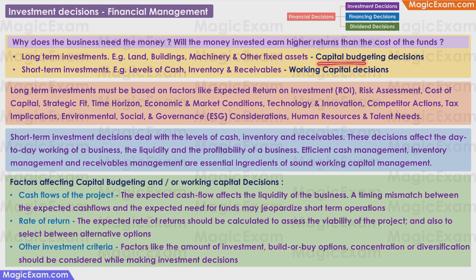These decisions are called capital budgeting decisions. The business may also need money for short-term investments like maintaining some levels of cash, some levels of inventory, and receivables. And these decisions are called working capital decisions.